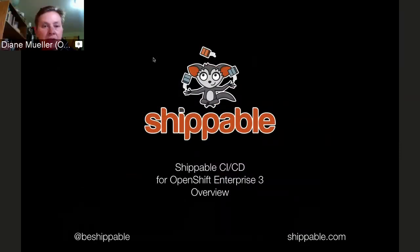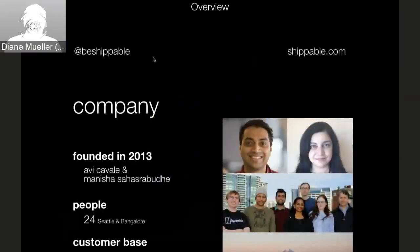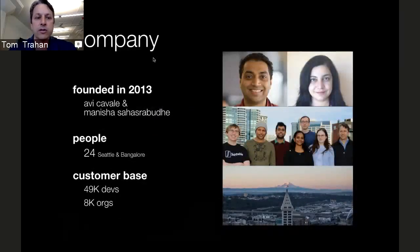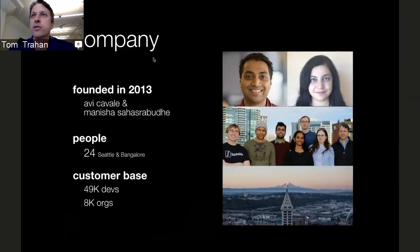I really want to thank Tom and the folks at Shippable — Abby, Cabell, and Tom Ferhan — for coming today and giving us this talk on CICD workflows using Shippable on OpenShift 3. My name is Tom Trahan. I'm from Shippable, located here in Seattle. Also on the call today I've got Abby Cavalli, our CEO and co-founder, and Ragesh Krishna, one of our lead engineers. Shippable was founded in 2013 by Avi and Manisha. We've got 24 people, based in Seattle with a development office in Bangalore, and almost 50,000 developers using our CICD product covering 8,000 organizations.